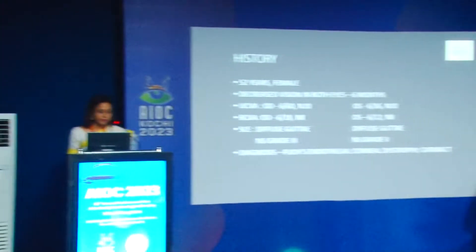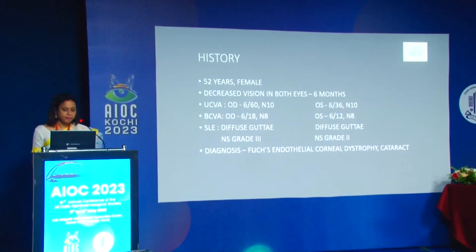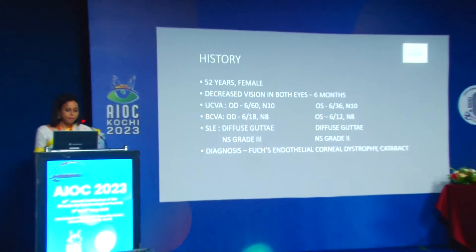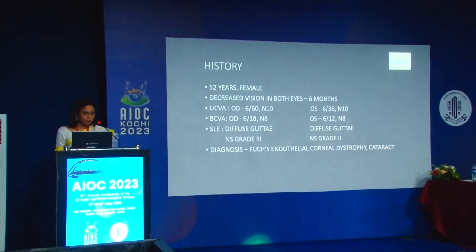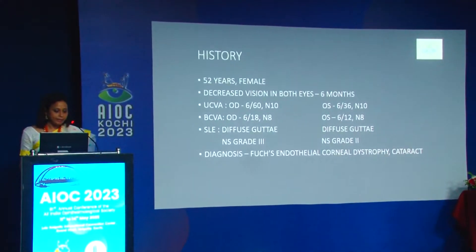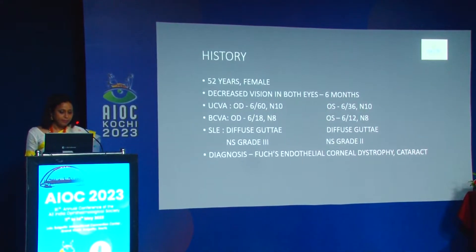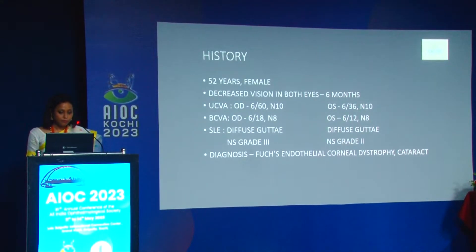I'll start with a case of a 52-year-old female who presented with decreased vision in both eyes for six months, worse in the right eye — 6/18 N8 with correction and 6/12 N8 in the left eye. There was diffuse guttae in both eyes, more in the right, and nuclear sclerosis grade 3 in the right and grade 2 in the left eye.